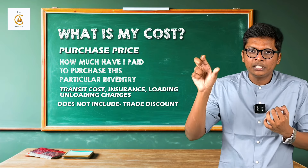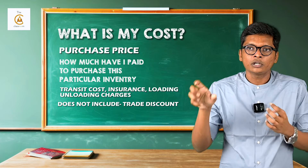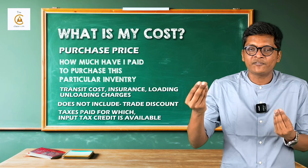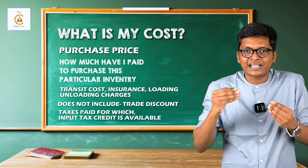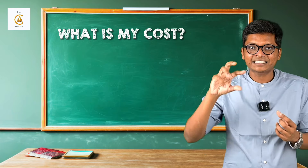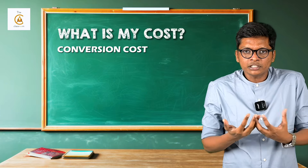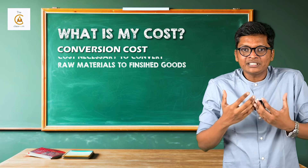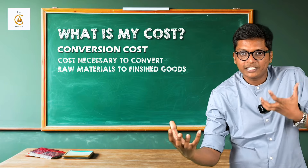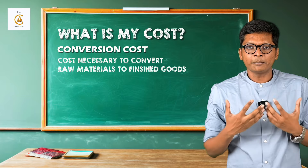What is my cost? Cost involves three components. First is purchase price — how much have I paid to purchase this particular inventory? This includes add-on items like transit cost, insurance, loading, and unloading charges.